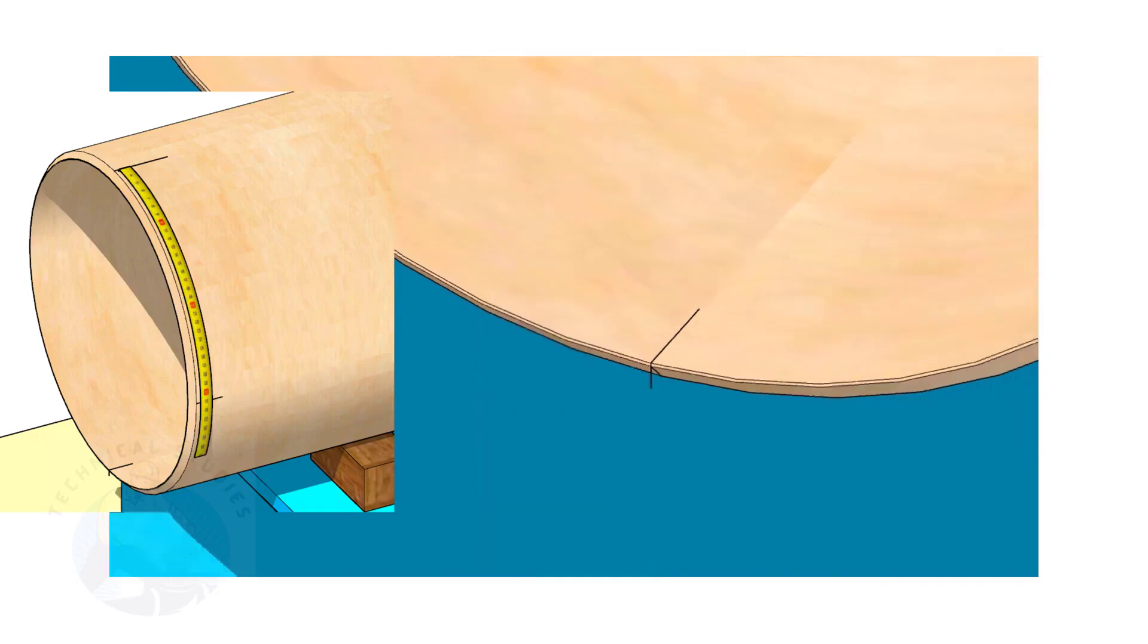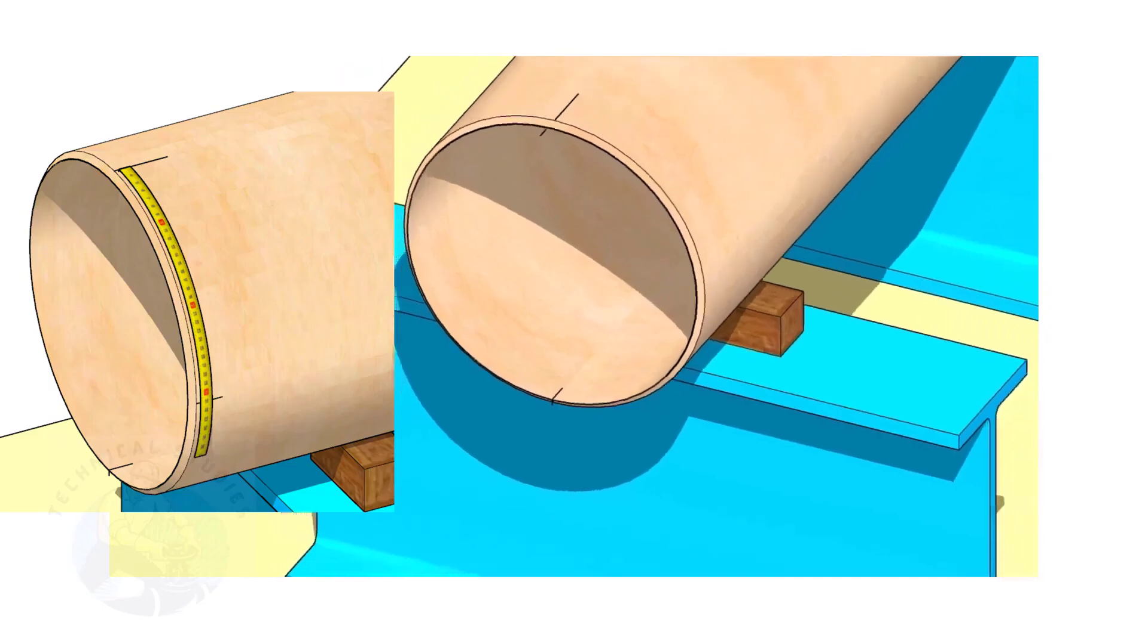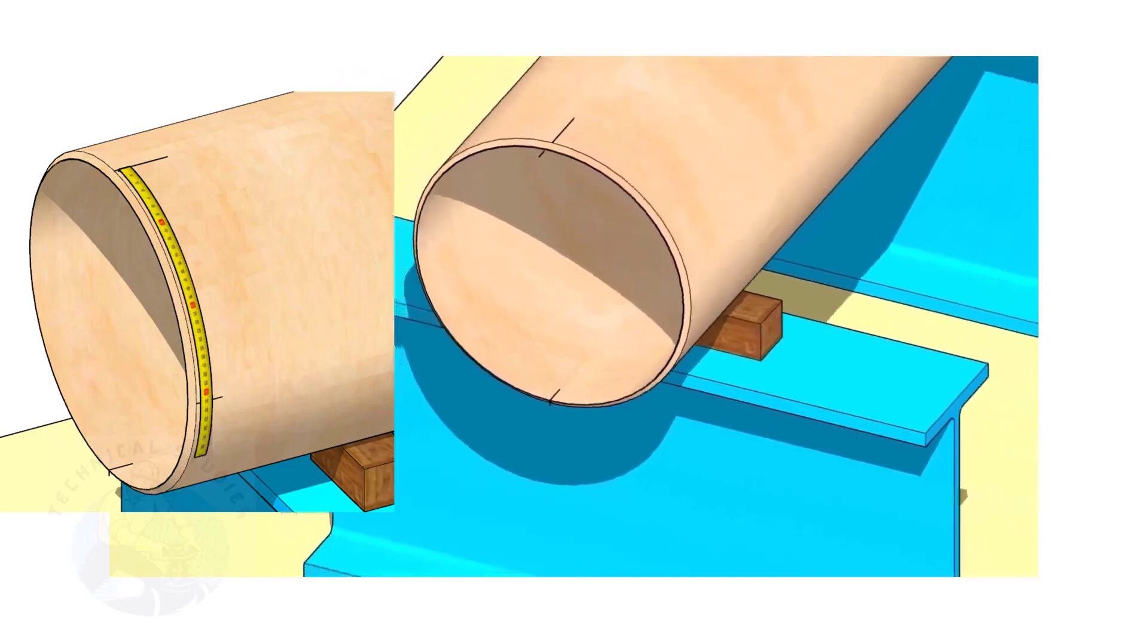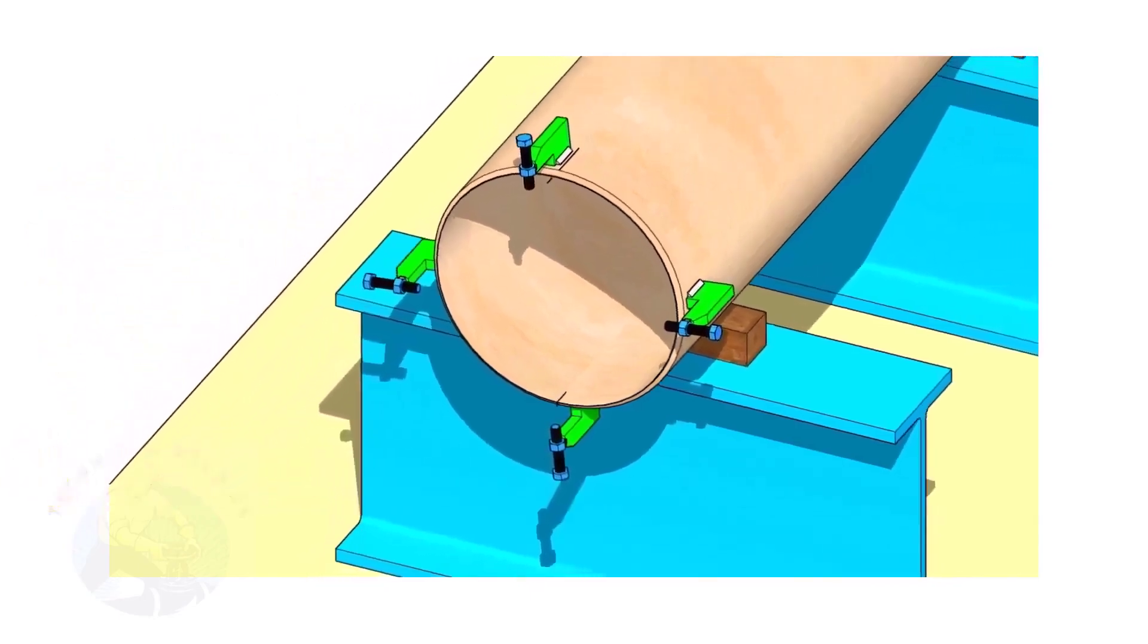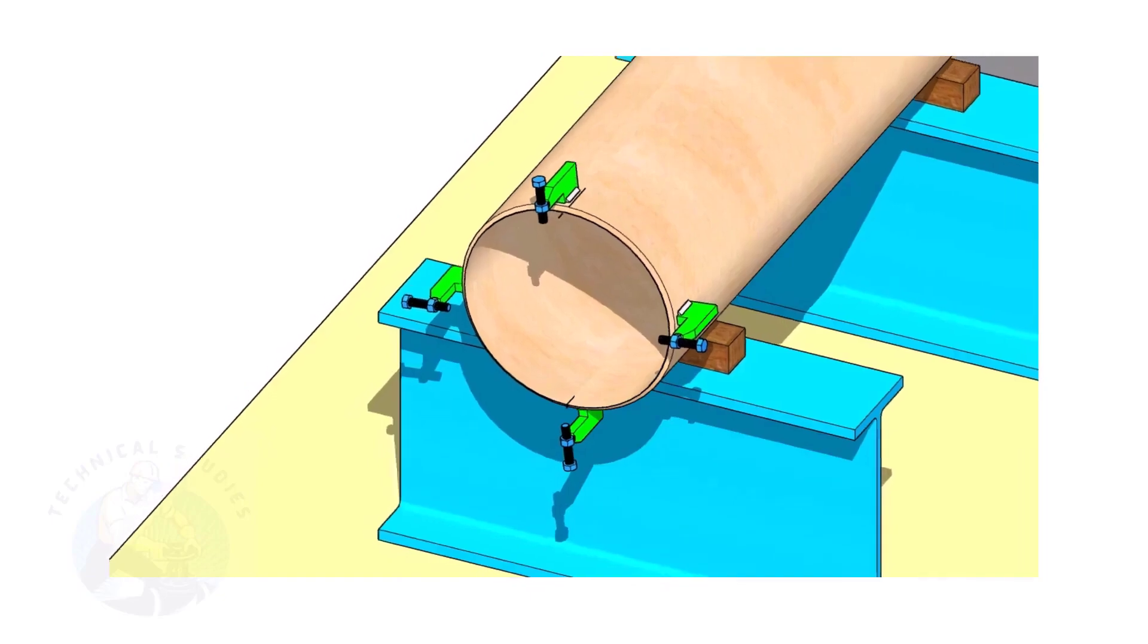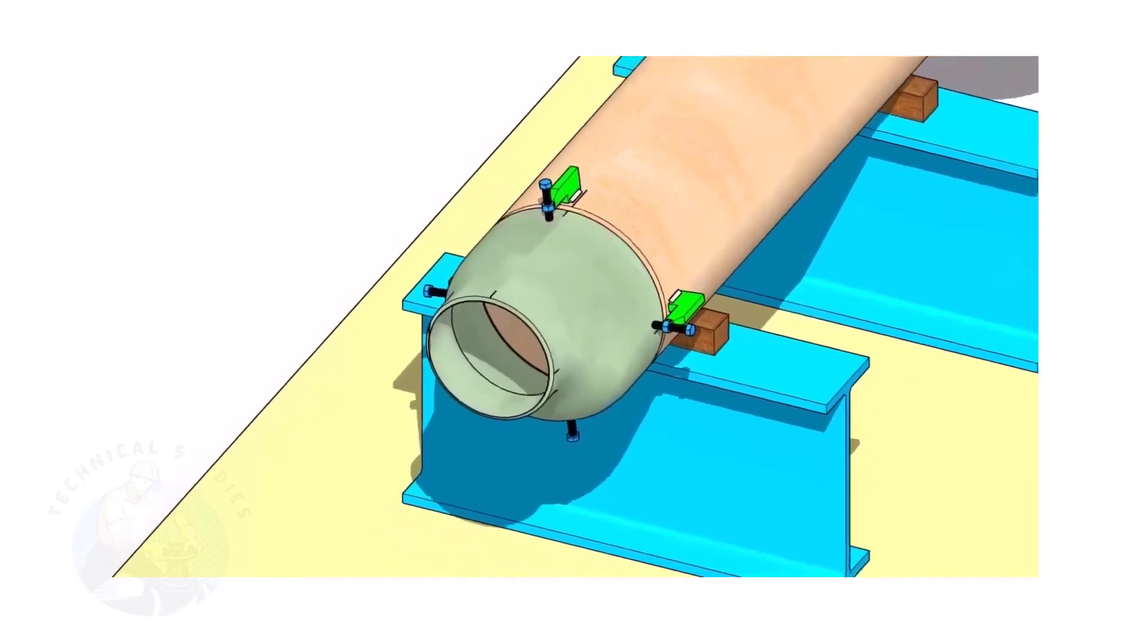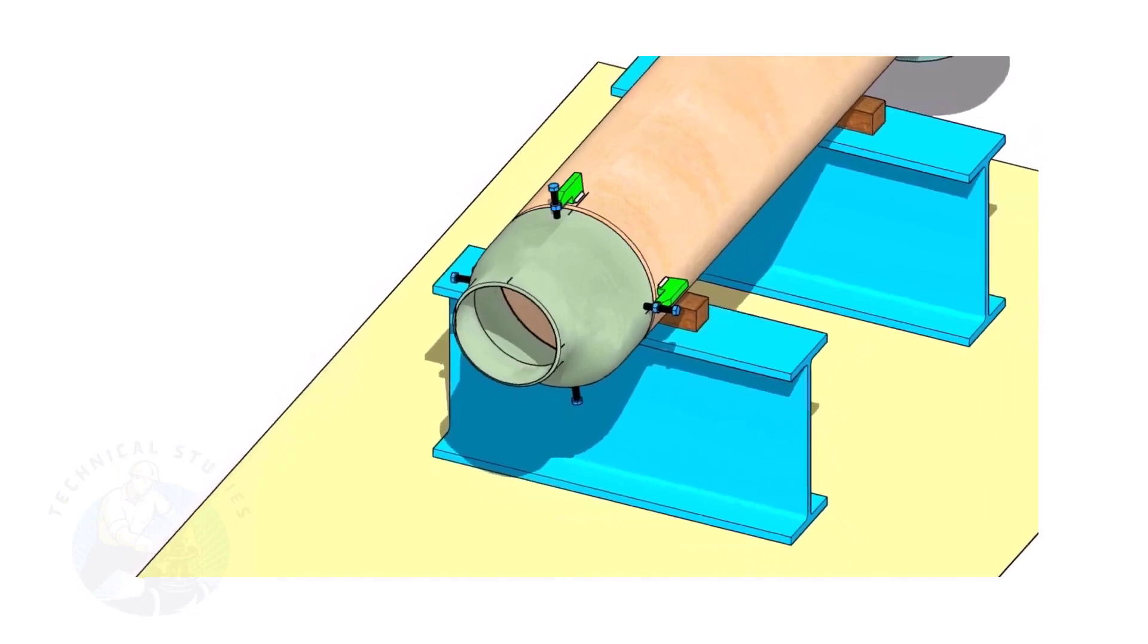Mark the quarter circumference on both sides of the pipe. If you don't have a pipe aligning clamp, tack weld four number jack bolts 90 degrees apart, as shown. Put the reducer in the clamps. Slightly tighten the bolts.